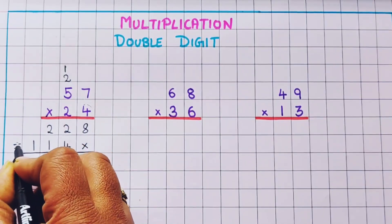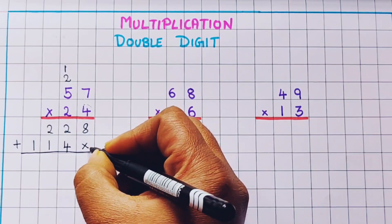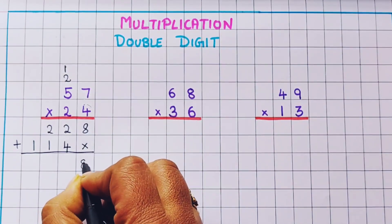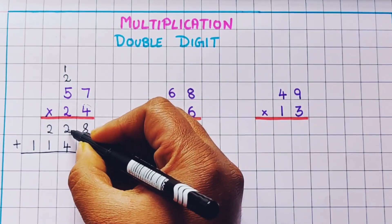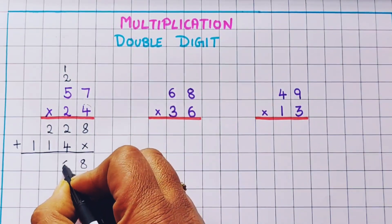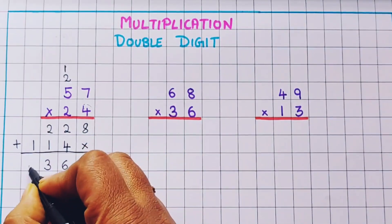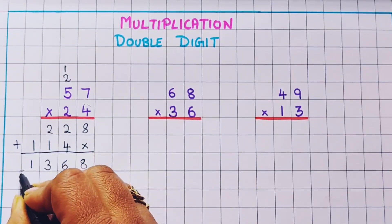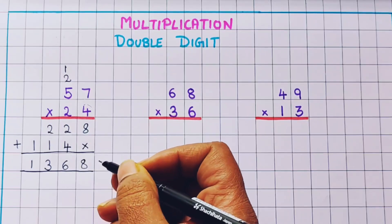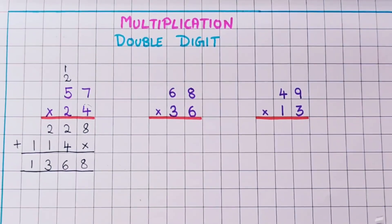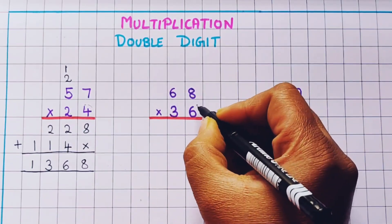Now I'm going to do the addition. 8 plus nothing is 8. Now 2 plus 4 is 6. Now 2 plus 1 is 3, and here 1 comes as it is. So the answer is 1368.